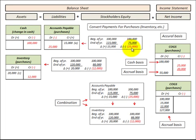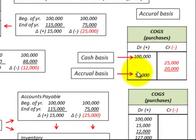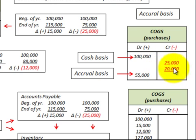In the example where we had a $25,000 reduction in our accounts payable for the year, we'd debit or decrease our accounts payable by $25,000, and the balancing entry would be to credit or reduce our cost of goods sold by $25,000. Where we also had an increase in our inventory of $20,000, we'd debit or increase our inventory for $20,000, and the balancing entry would be to credit or reduce our cost of goods sold for $20,000. To calculate our accrual basis, we take our cash basis of $100,000 — the cash payments made for the year — and reduce it by $25,000 for the reduction in accounts payable and $20,000 for the increase in inventory. The balancing amount would be $55,000, and that would be our accrual basis.